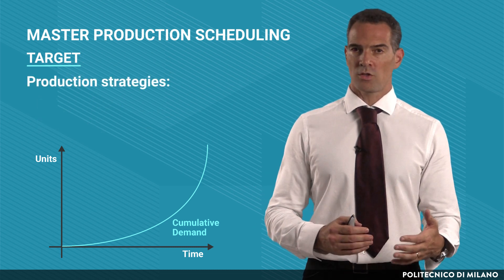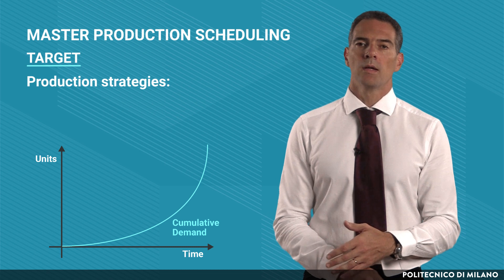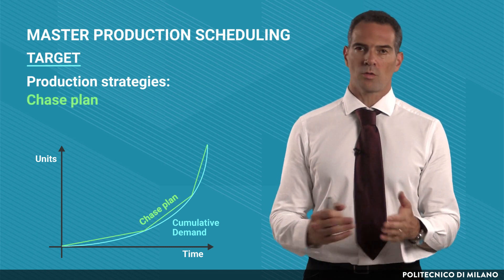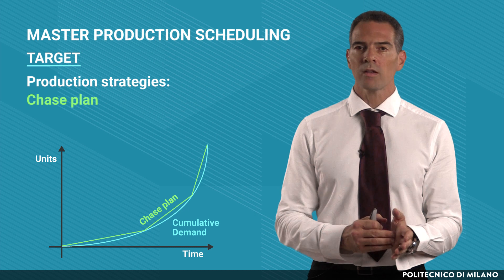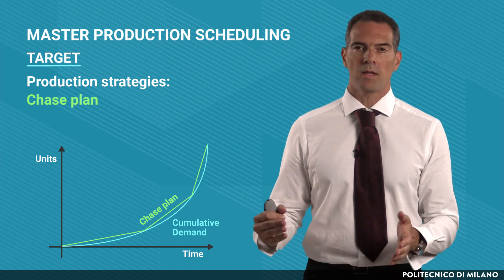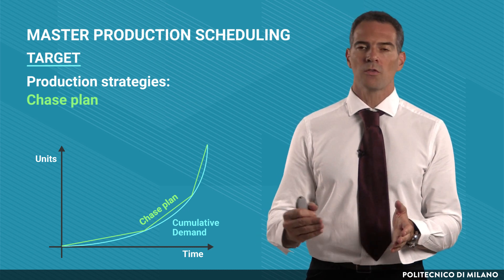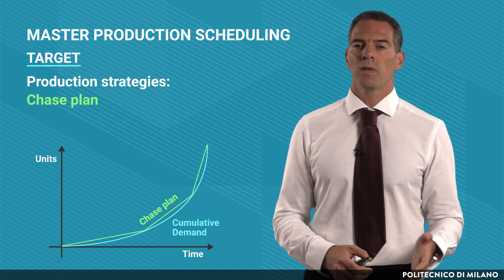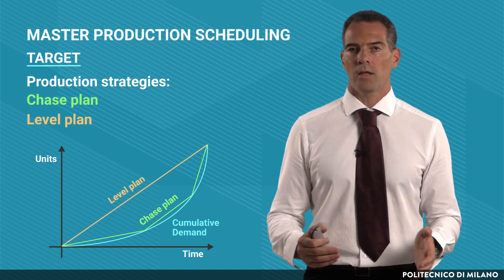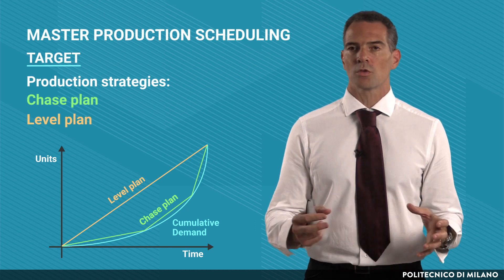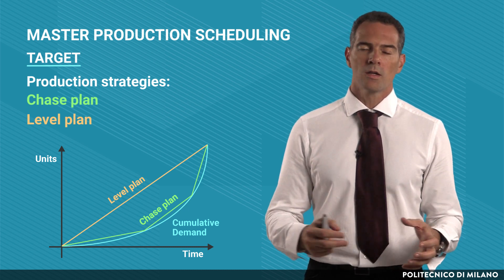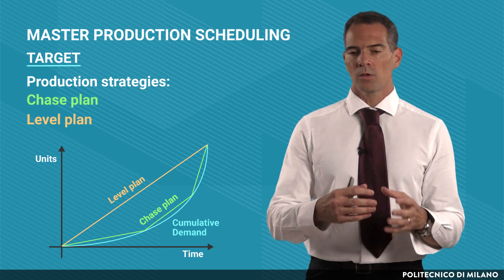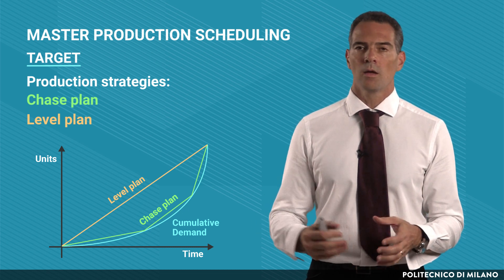One first production strategy available is called the chase plan, in which we try to follow demand closely, while the level plan uses production resources in a more regular way so as not to stress production resources and to compensate for increasing demand by using inventories.